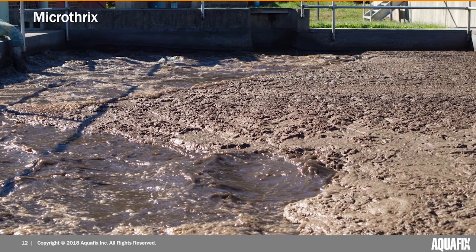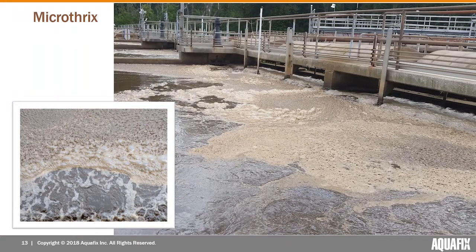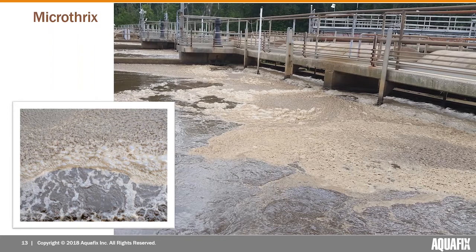Here's an oxidation ditch also dealing with Microthrix. With a lot less agitation overall, this plant had maybe 30% foam coverage, but they actually had a sizable Microthrix outbreak. You see the foam show up after the aerators. Even though it wasn't 100% coverage, it was impacting settling — so even though it might not look like much at first glance in an oxidation ditch like this, it was actually a fairly bad outbreak.